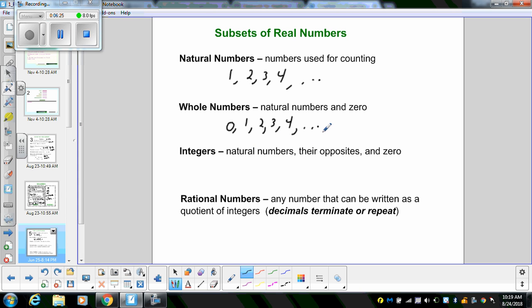Integers are natural numbers, their opposites, and zero, so this was going from negative 3 to negative 2, negative 1, including 0, and 1, 2, 3. Rational numbers, any numbers that can be written as a quotient of integers, decimals terminate or repeat. That would be like 7 thirds, that's a fraction, negative 5 over 2, negative 2 over 5, 0, 0.4, negative 1.6, and 8. So all of those can either be represented by fractions or decimals that repeat with a pattern.